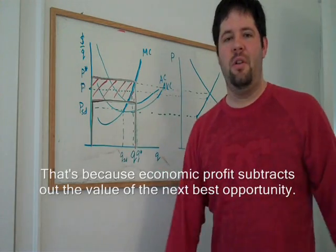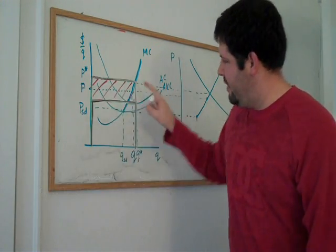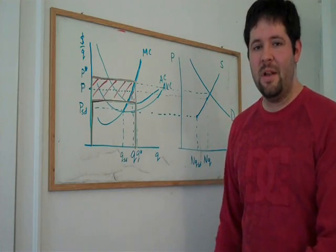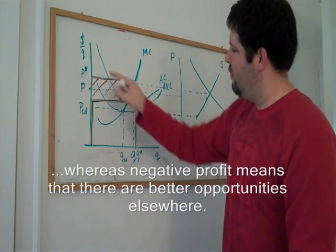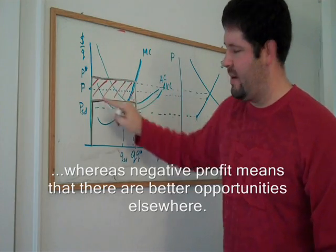It means that there is the best opportunity for those resources. If those resources can earn positive profit, firms might as well enter. So if we see a positive profit rectangle here, what we'll see is that the number of firms will start to increase as soon as it can.